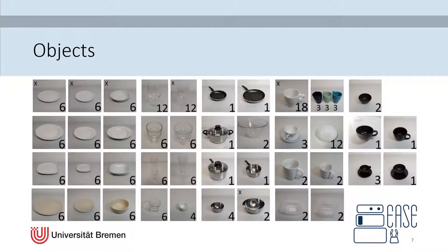All the objects we used inside the dataset can be seen here. We have porcelain objects, glassy objects, and metallic objects. We especially selected a few objects that look the same but just differ in size. We also selected some black objects because they are even harder to detect. The maximum amount of one object that can be found inside one image is shown via the number in each image. All marked objects with an X can also be seen in the dishwasher scene.